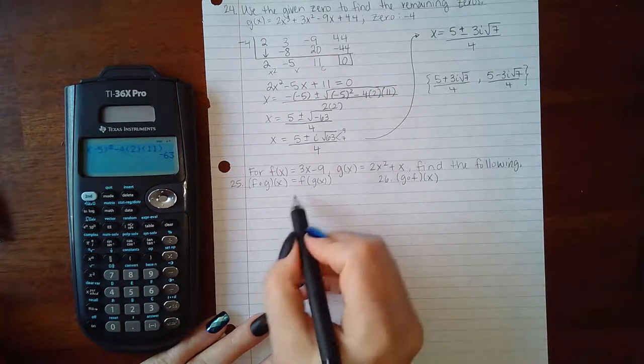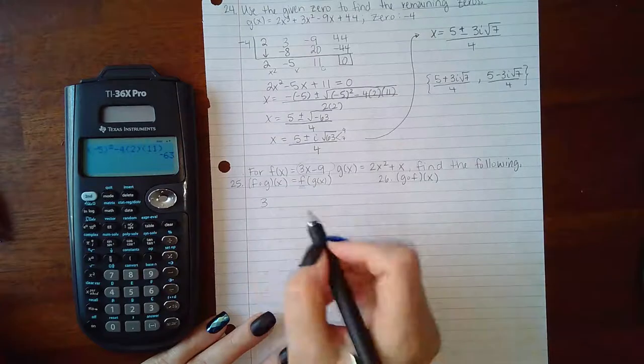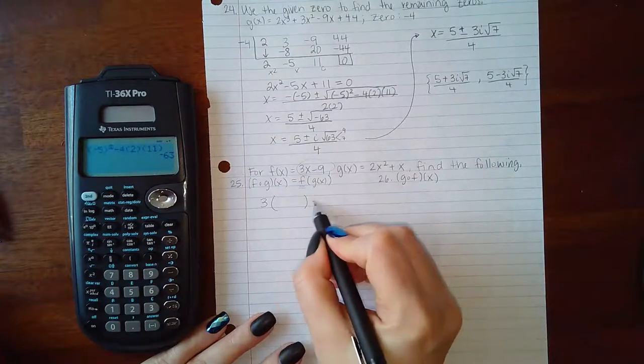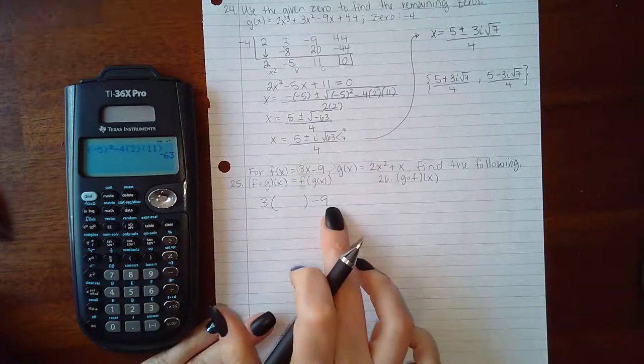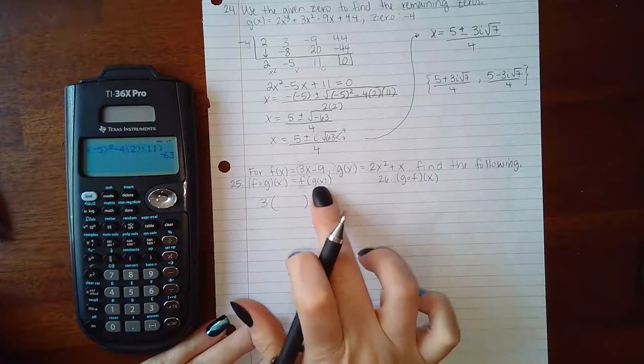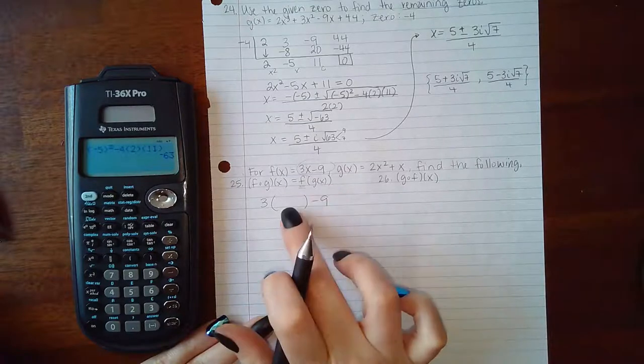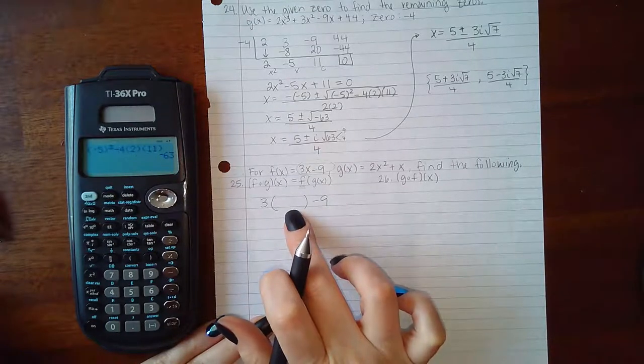So what that means is I'm going to write the f function, this thing here, but instead of x I'm going to put a giant blank. So this is the function f but without anything plugged in for x. Now notice inside the parentheses it says g of x. So what I'm going to do is inside these parentheses I'm going to put g of x.